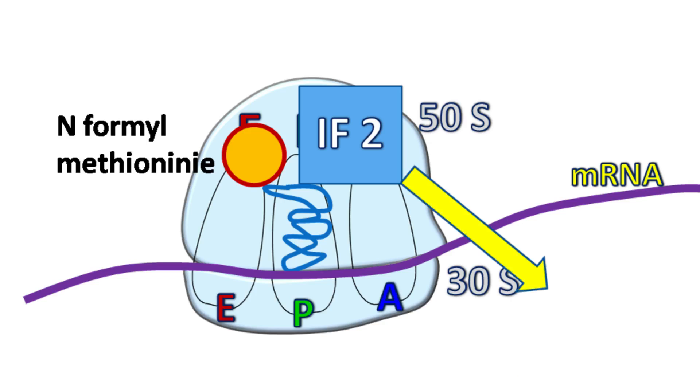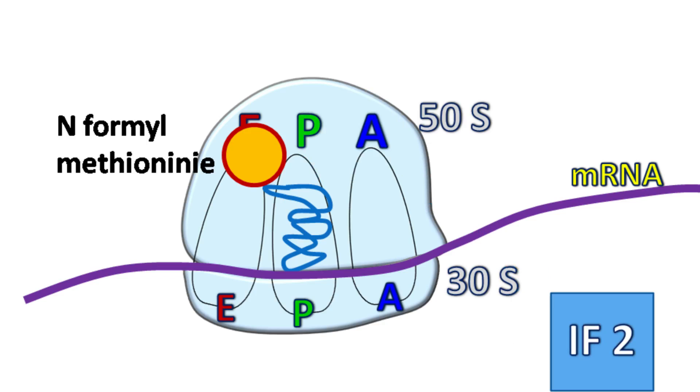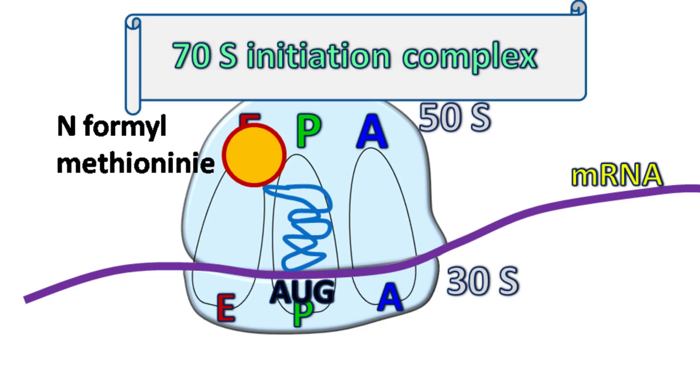Finally, IF2 is also released from the ribosome. This complex so formed is known as 70s initiation complex.